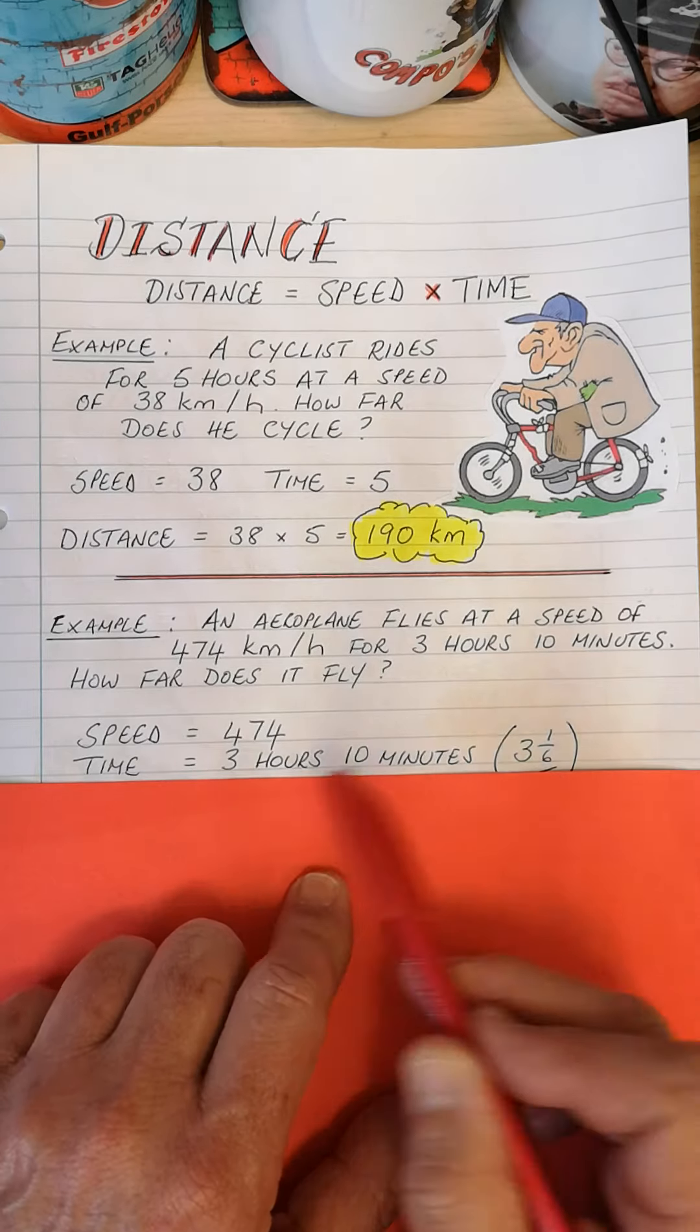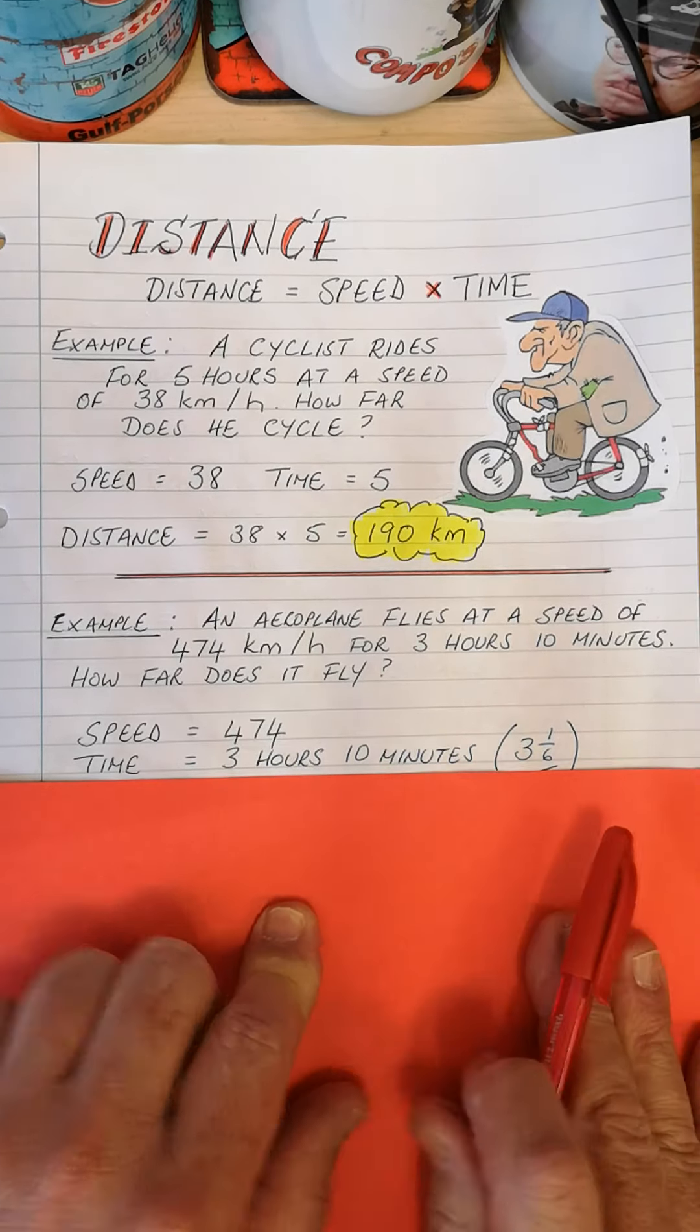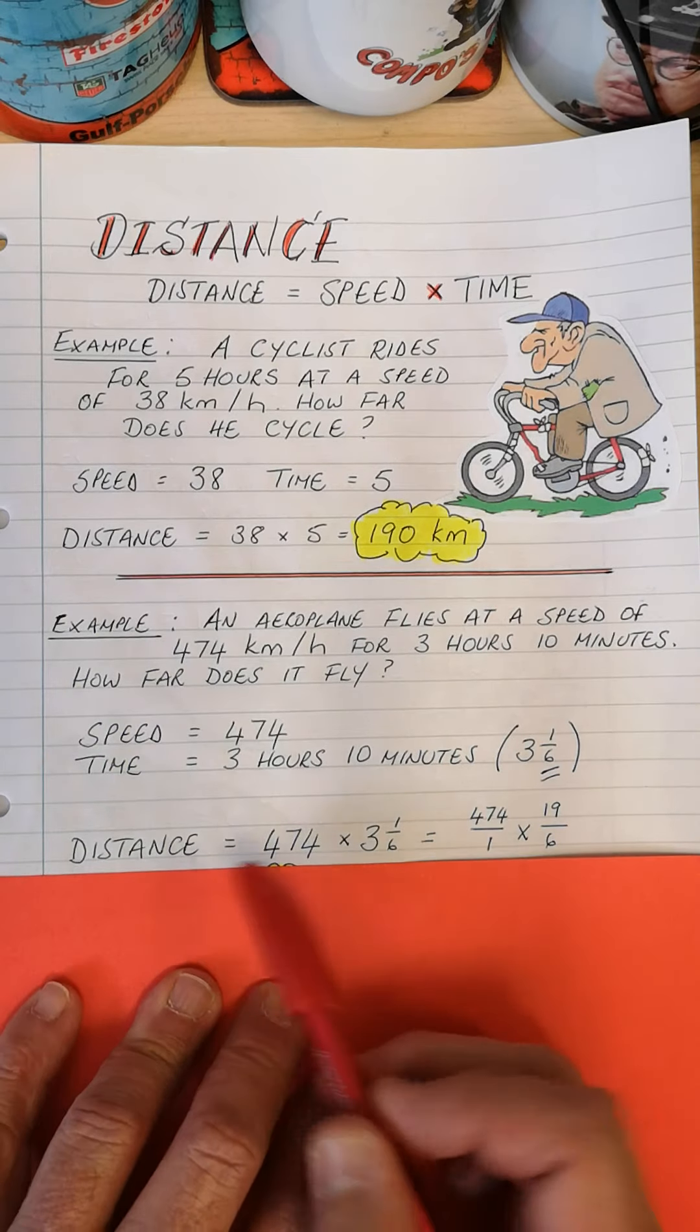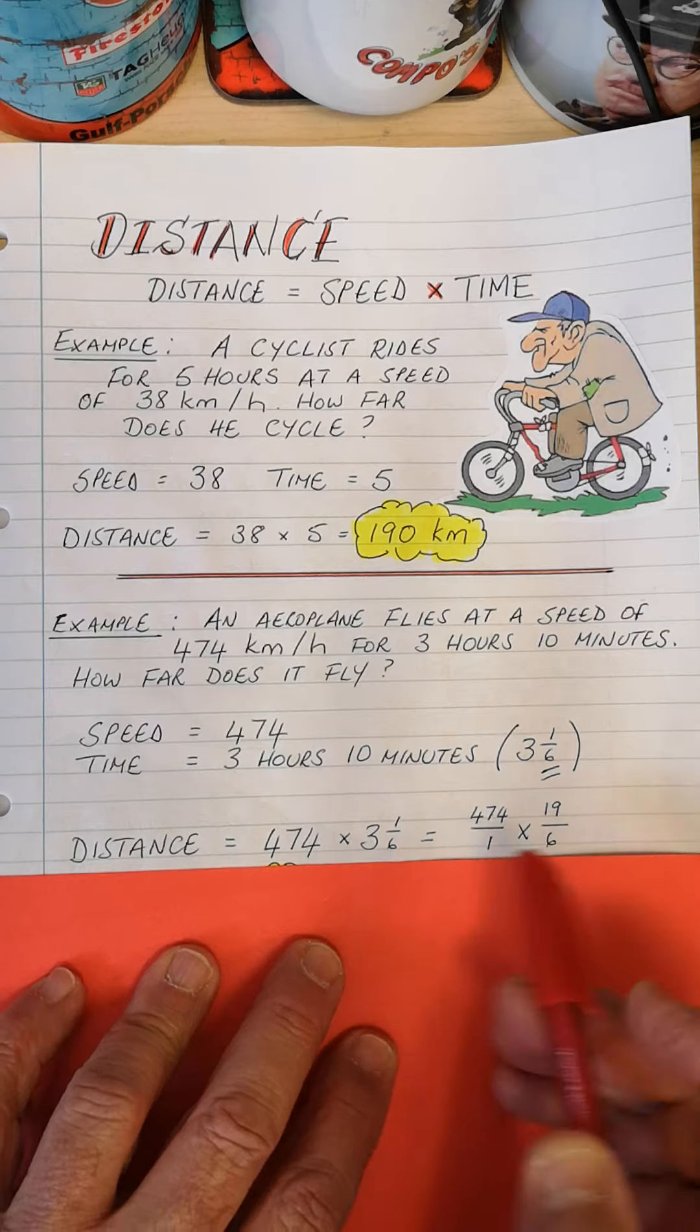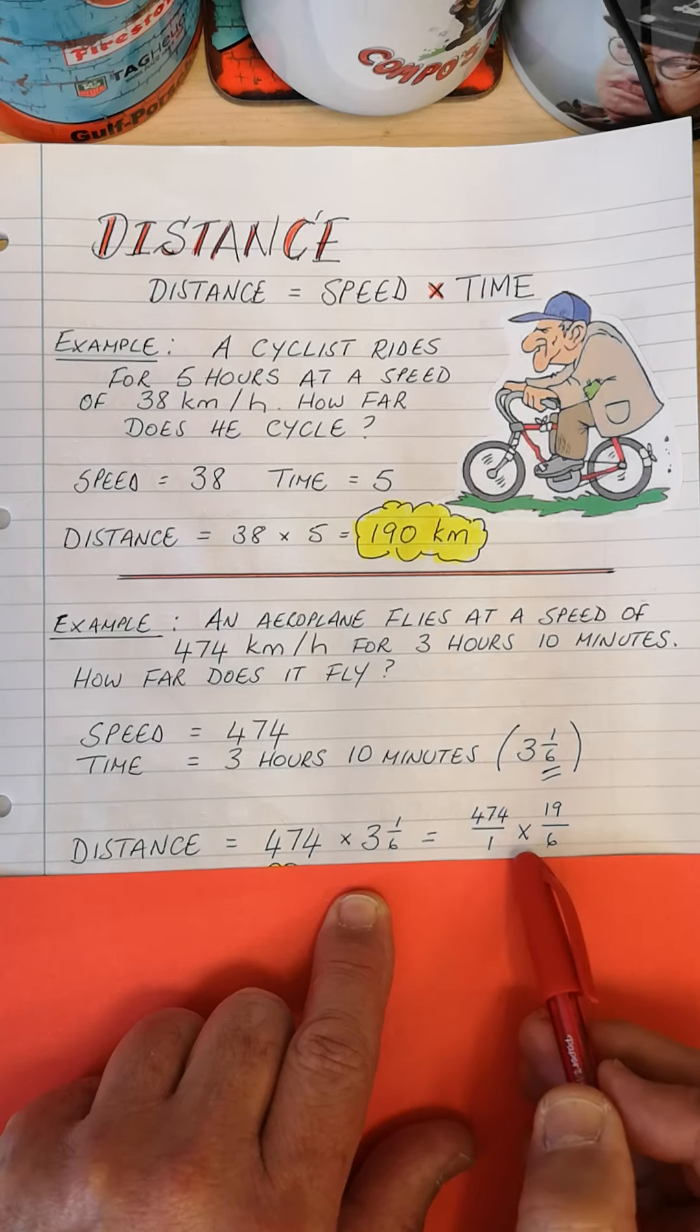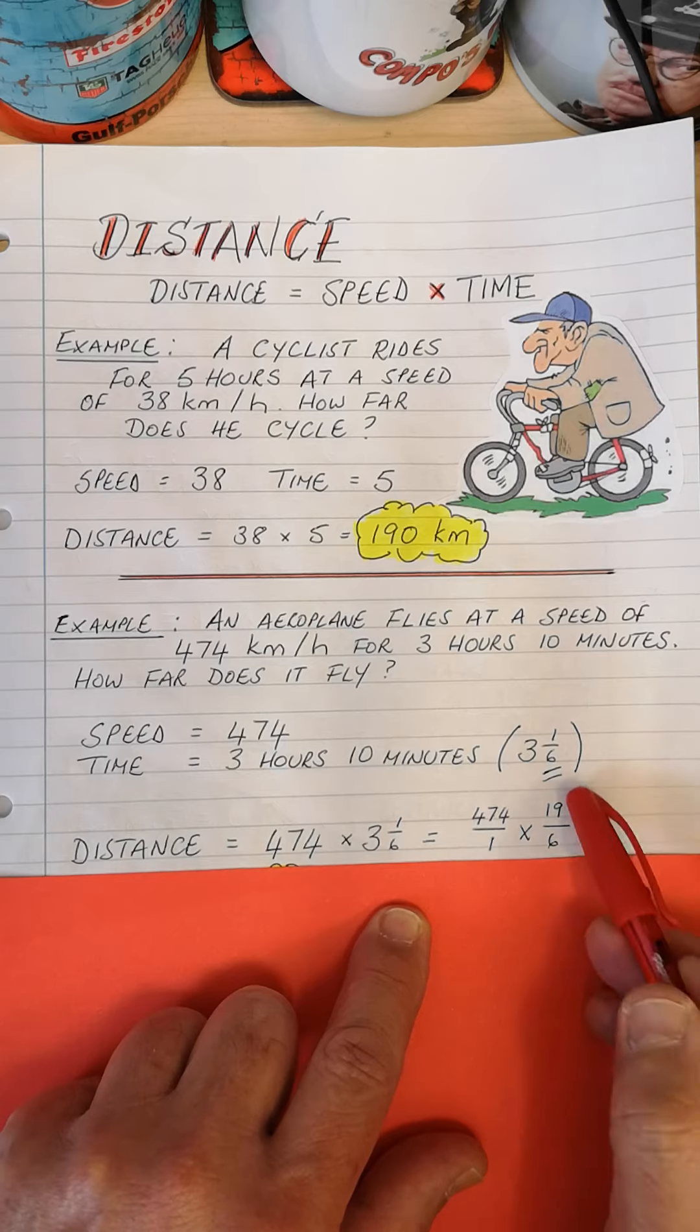So again, speed is 474. Time is three hours and 10 minutes. Now look at the one sixth there. Ten minutes. How many minutes in an hour? Sixty. So what fraction is 10 minutes over 60? We simplify it and it's one sixth. So the full three hours and one sixth, equating to the 10 minutes.